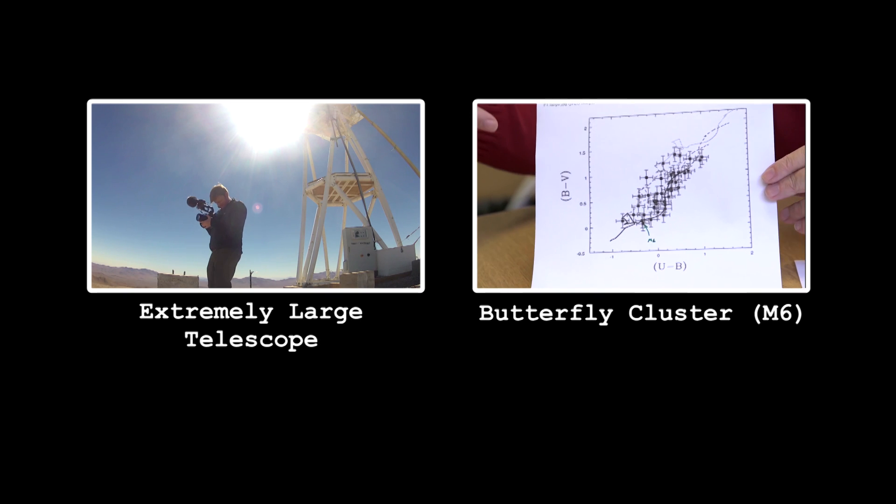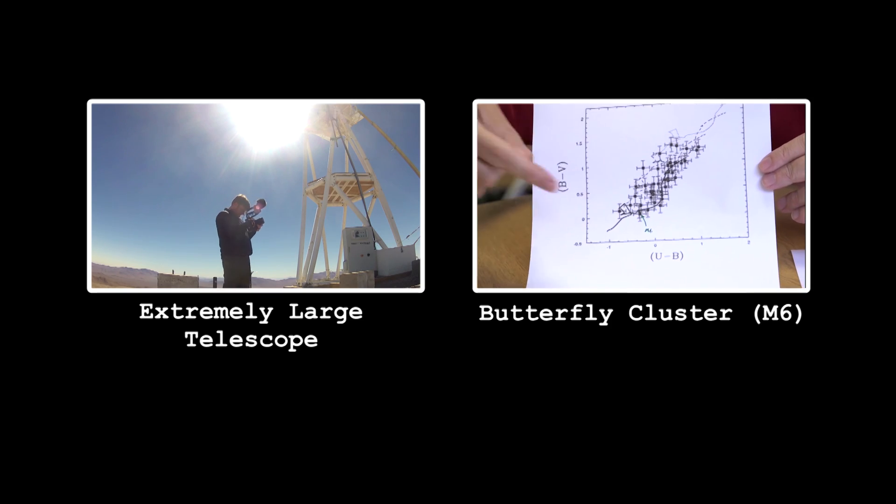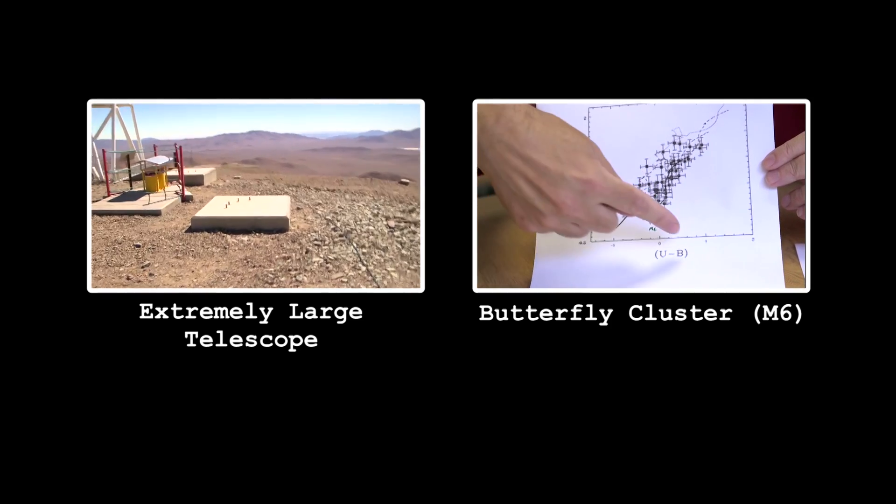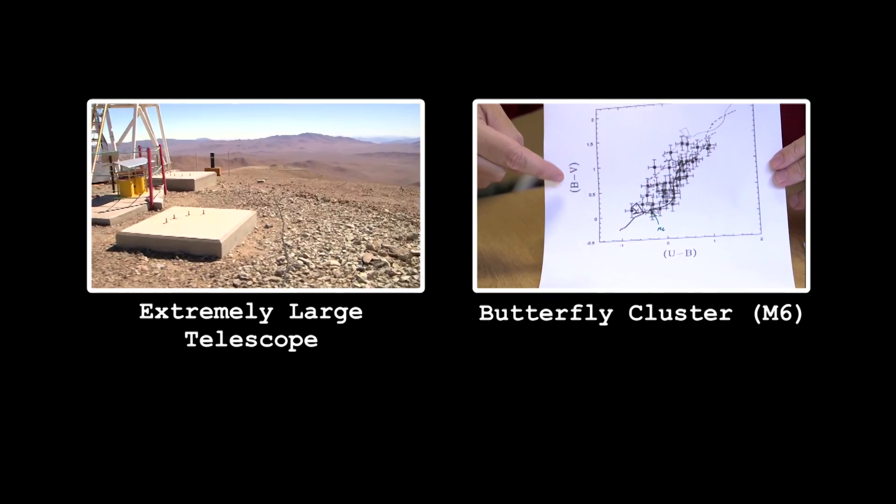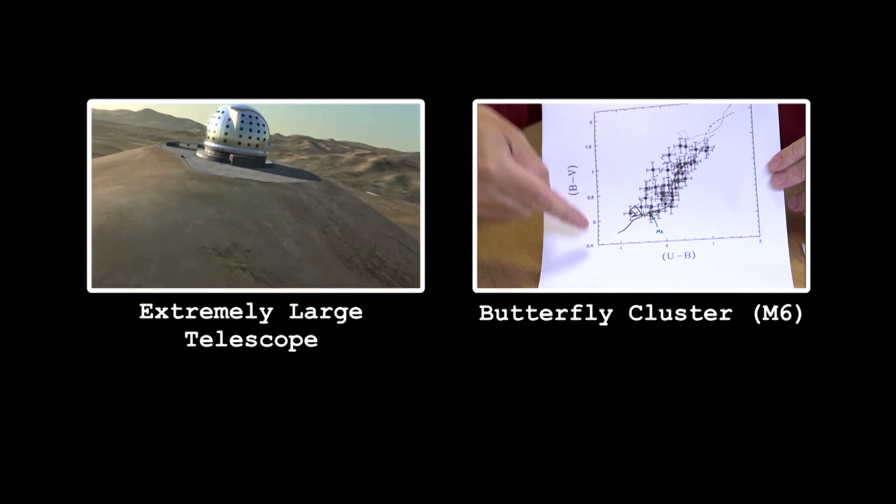It's quite a privilege to be on the summit and there won't be many more people on this summit because when they come around to actually build the ELT, they're going to actually blow the summit up in a way. They have to flatten all this. They're going to lower the mountain a bit and make a nice big flat platform for the ELT.